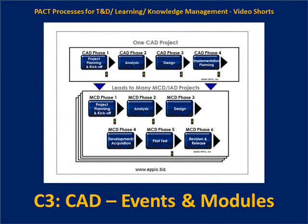A curriculum architecture design project does not produce any new training. It simply analyzes performance-based needs and assesses existing content for reuse appropriateness — either as-is, after modification, or declares it not appropriate. A training and development path is designed with events at two levels: event and modules. All gaps in the path are prioritized in phase four, leading to one or many MCD and IAD efforts — Modular Curriculum Development and Acquisition, and Instructional Activity Development and Acquisition — the ADDIE-like methods of the PACT processes.